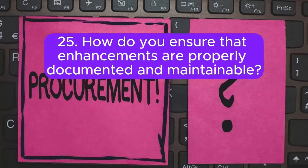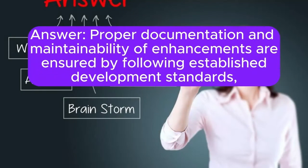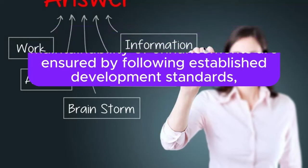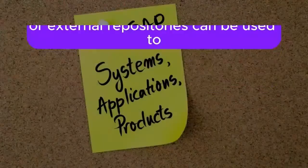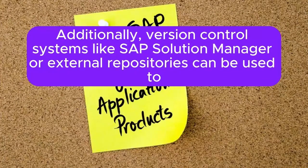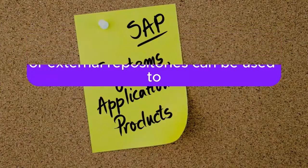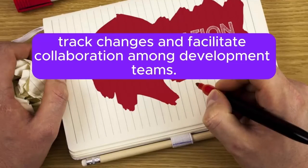How do you ensure that enhancements are properly documented and maintainable? Proper documentation and maintainability are ensured by following established development standards, documenting customizations comprehensively, and maintaining a centralized repository of enhancement-related documentation. Additionally, version control systems like SAP Solution Manager or external repositories can be used to track changes and facilitate collaboration among development teams.